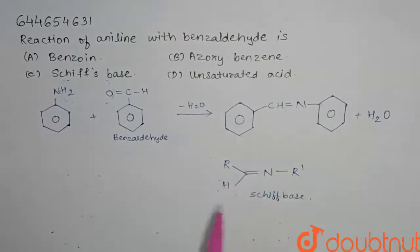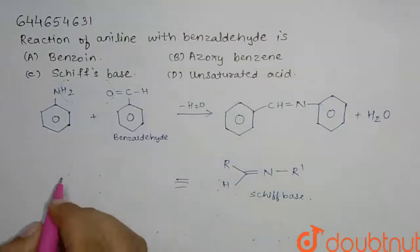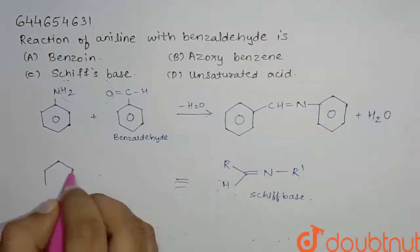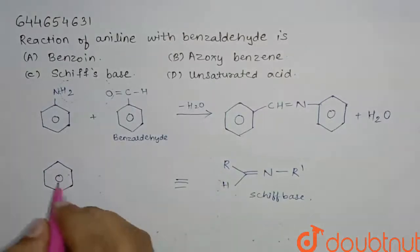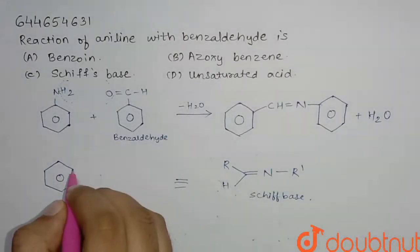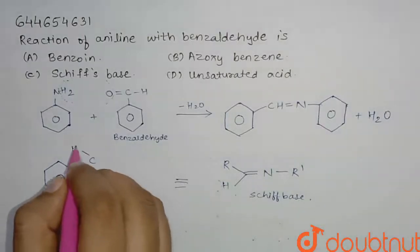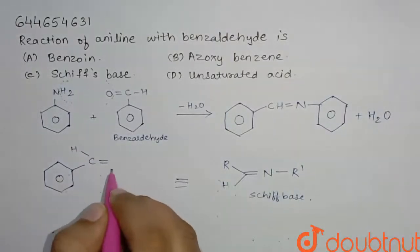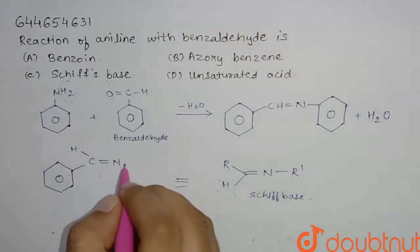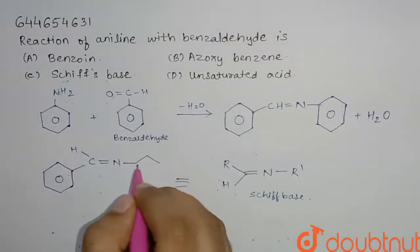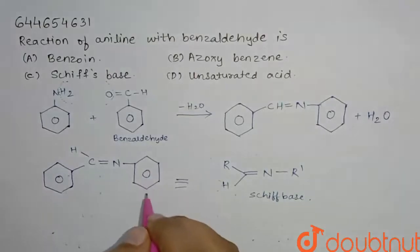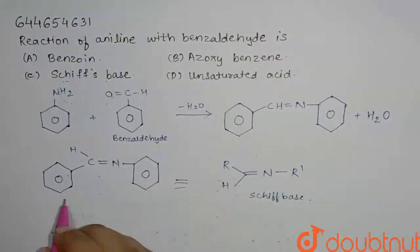So our product has benzene attached to a carbon, which is attached to a hydrogen, then a double bond to N, and R' — that is another alkyl group — so we have C6H5 here. This product matches the Schiff base structure.